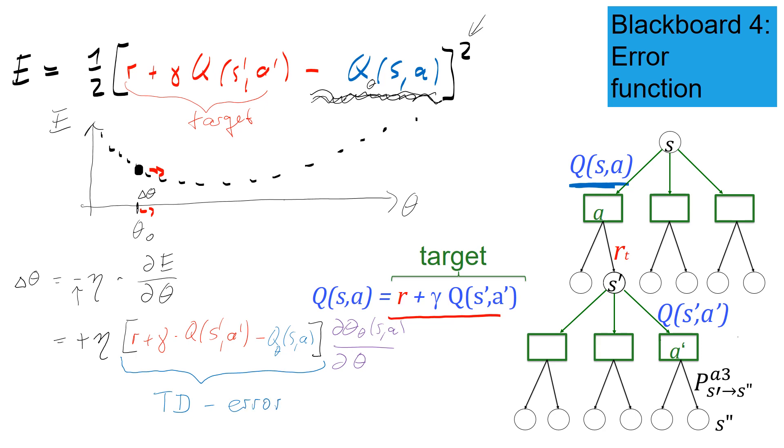Now this is nice because this here is just the standard TD error. So the updates of my parameters that describe the Q function, the Q value, the function of Q values, the update is proportional to the TD error, just as in standard SARSA. And then I have the extra term.